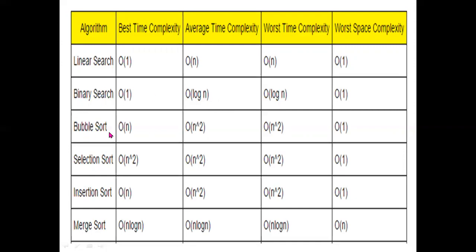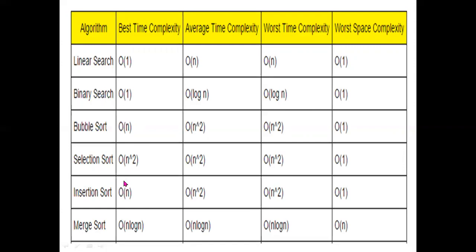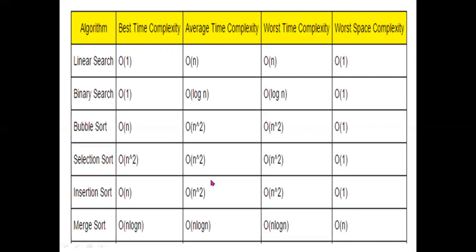Okay friends, next bubble sort and insertion sort. For bubble sort and insertion sort, the best time complexity is O(n). The average time complexity and worst time complexity are O(n²).